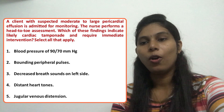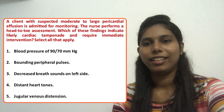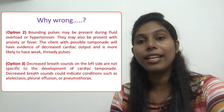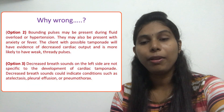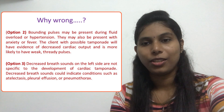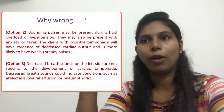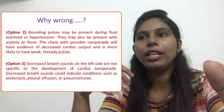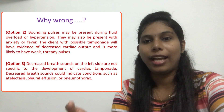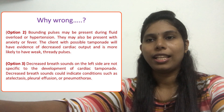Option two: bounding peripheral pulses. Does a cardiac tamponade client have bounding peripheral pulses, or a weak and thready pulse? A cardiac tamponade client will have a very weak and thready pulse, because cardiac output decreases and hypotension is present. We cannot expect this client to have a bounding pulse — that usually presents with cardiac overload and hypertension. So we eliminate option two.